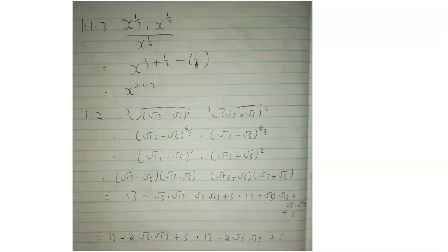For 1.1.3, same thing again — the same base was x, so I added the exponents and subtracted the one in the denominator. The result in decimal form gave me x to the power of 0.42. For 1.2, I first removed the square roots by dividing the number 60 by 3 on both sides, simplified to get 2 and 2, then expanded the two brackets and simplified to reach the final answer.